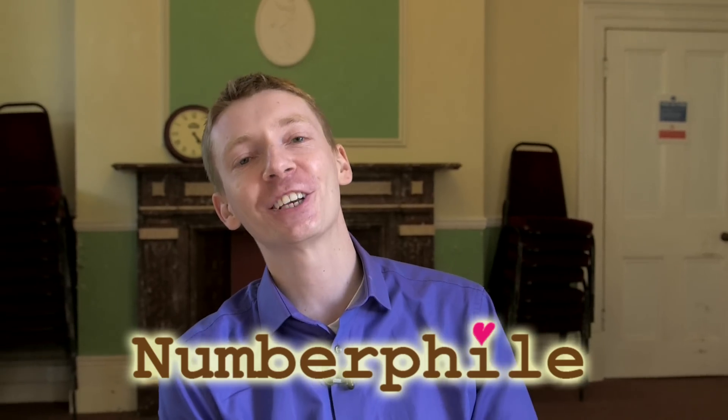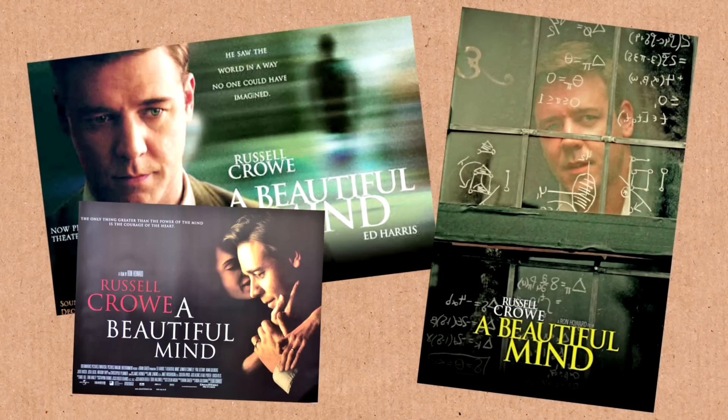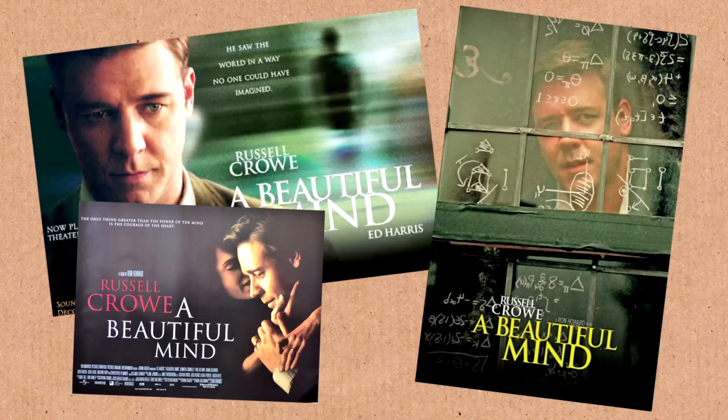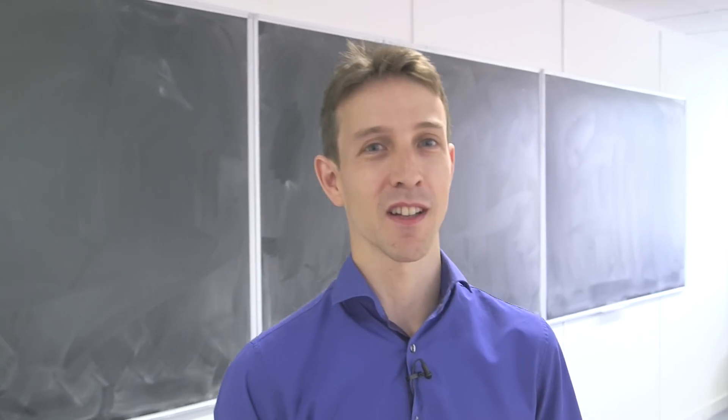So today I want to talk about John Nash. John Nash is slightly unusual as a mathematician because he's a mathematician that is better known to the public in general. Mathematicians don't tend to be known in the public eye. He was the subject of a film called A Beautiful Mind. The film had Russell Crowe in it, starring as John Nash. There's also a book, A Beautiful Mind, that it was based on by Sylvia Nazar.